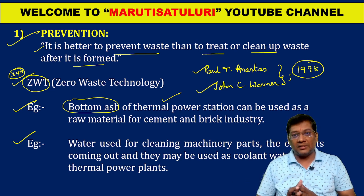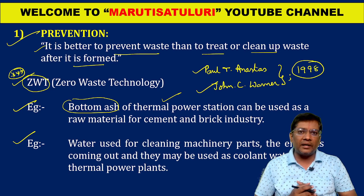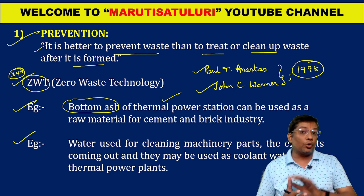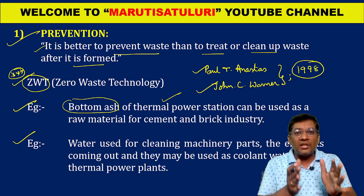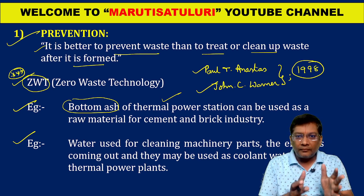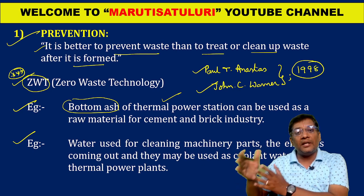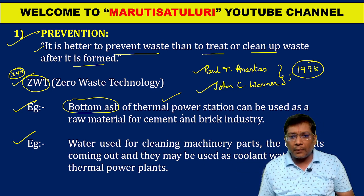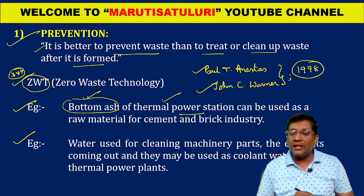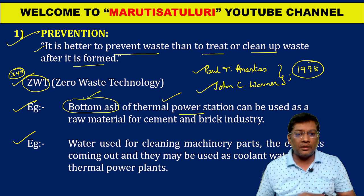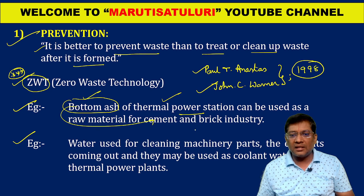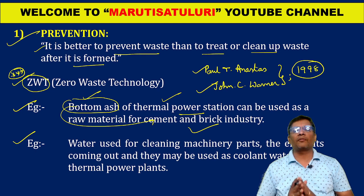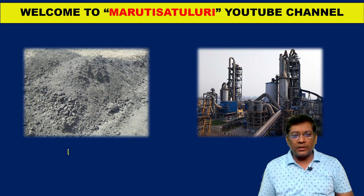For example, if you take the bottom ash from a thermal power plant: the raw material is coal, which is burned to produce heat, which converts water into steam, which rotates the turbine, which creates mechanical energy and thereby electrical energy. After electricity generation, the entire coal forms bottom ash — it is a waste material. But instead of throwing it into the environment, the same bottom ash can be used as a raw material for cement industry or brick industry.